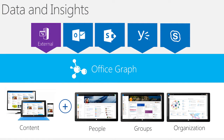The Office Graph indexes different pieces of business information, from emails in Exchange to social conversations in Yammer and meetings in Skype to documents in SharePoint and OneDrive. These objects, combined with behavioral signals, can be leveraged by developers to create experiences that are more relevant and personalized for an individual, a team, and the whole organization.